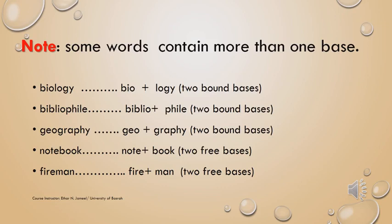Finally, there is a note about bases. Every word in English should have a base, because there should be a morpheme that carries the principal meaning of the word. If the word has a free morpheme, that free morpheme is going to be the base — a free base. And if the word consists of bound morphemes only, one of them is going to be the base — a bound base. The note says that some words contain more than one base. This happens when the principal meaning of the word is carried by two morphemes, not just one.